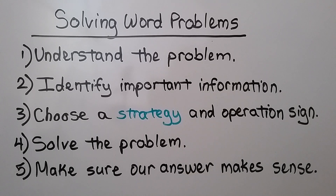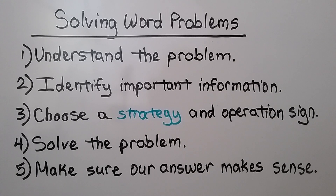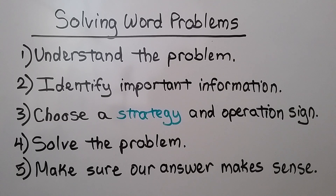For solving word problems: one, we need to understand the problem. Two, we need to identify important information. Three, we choose a strategy and operation sign and write our equation. Four, we solve the problem. And five, we make sure our answer makes sense — we check our answer.